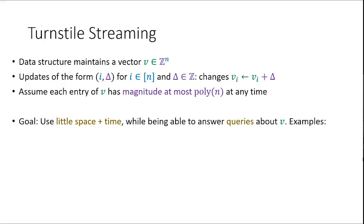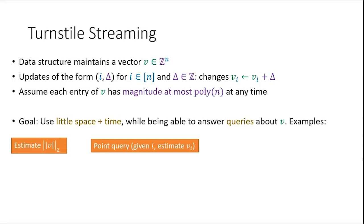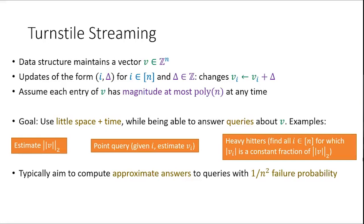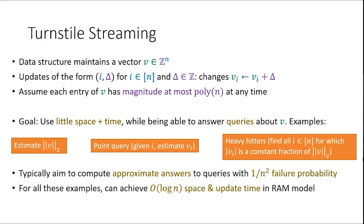Typically, the goal in turnstile streaming is to use very little time and space while still being able to answer interesting queries about the vector you're implicitly maintaining. Examples include estimating the L2 norm, answering point queries — given an index i, estimate the i-th entry — or finding heavy hitters: entries that are large compared to the rest. Our goal is usually to use very sublinear space and time, giving good approximations with low failure probability like 1/poly(n). It turns out you can solve all of these using just O(log n) space and update time in the RAM model.